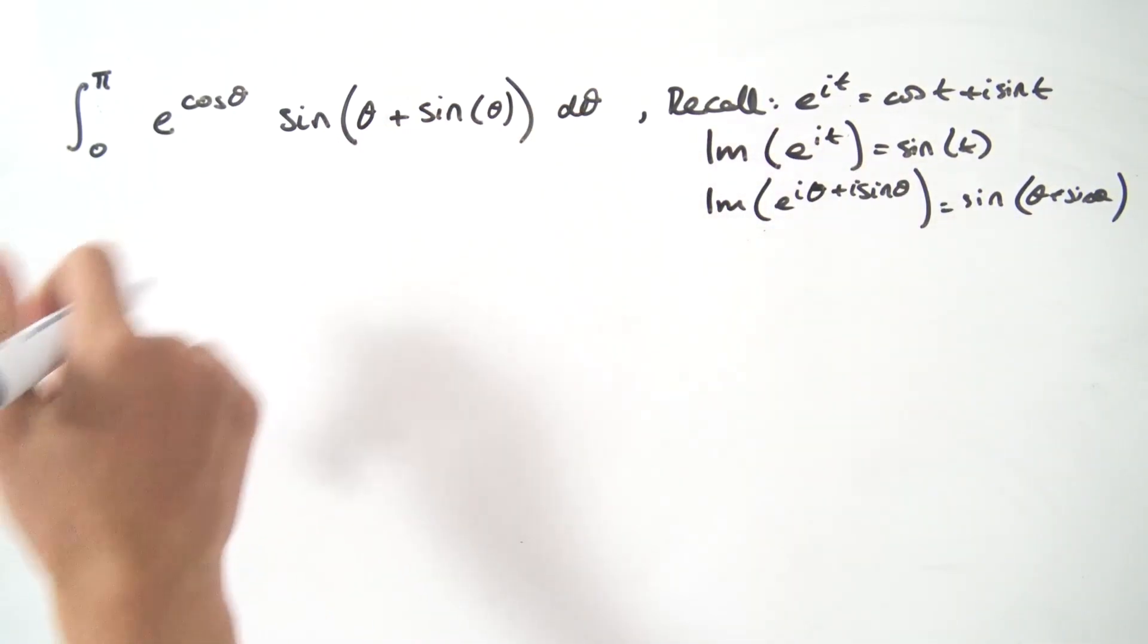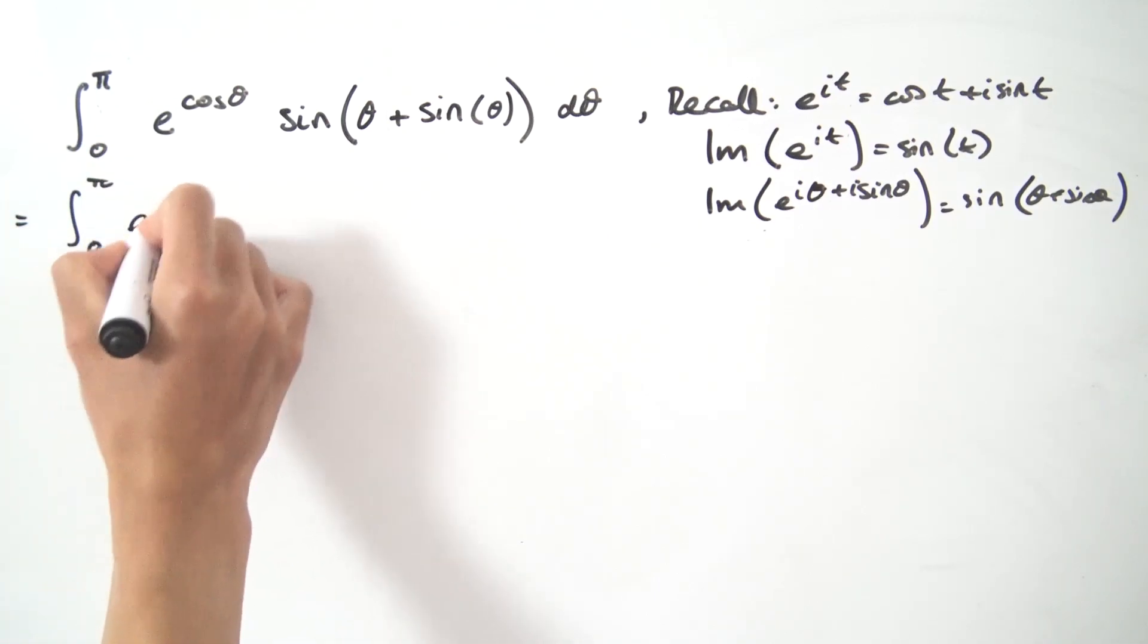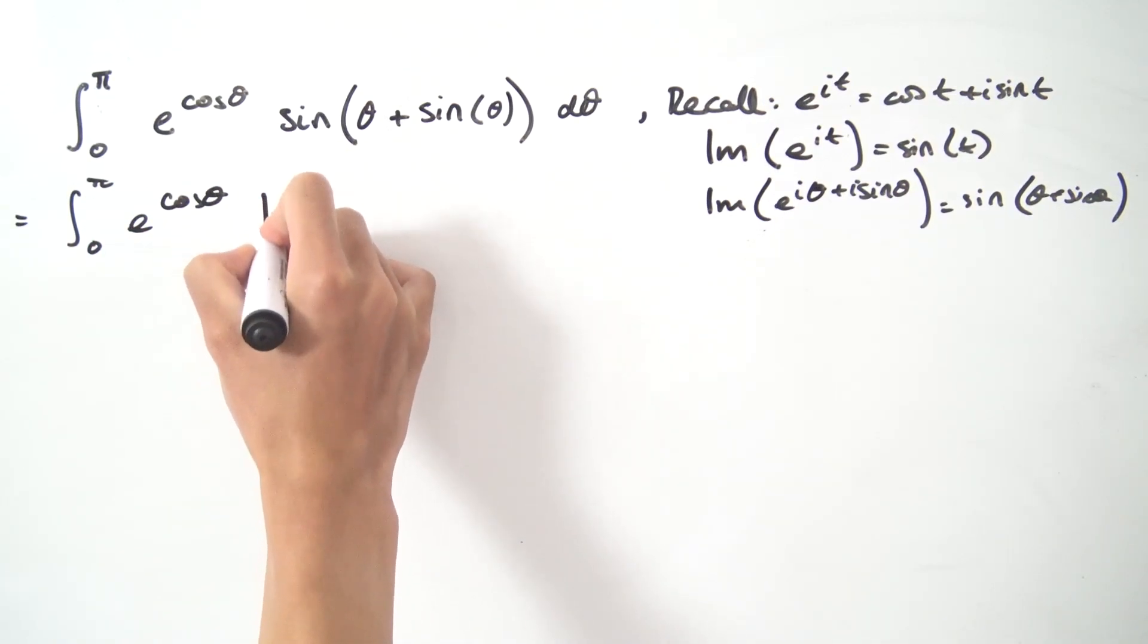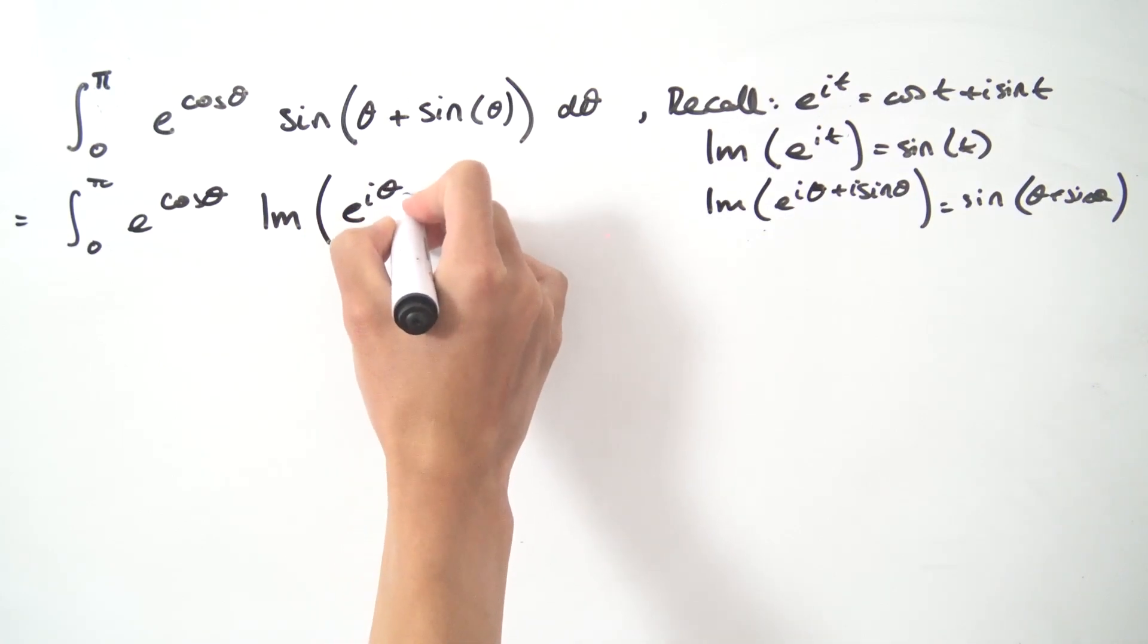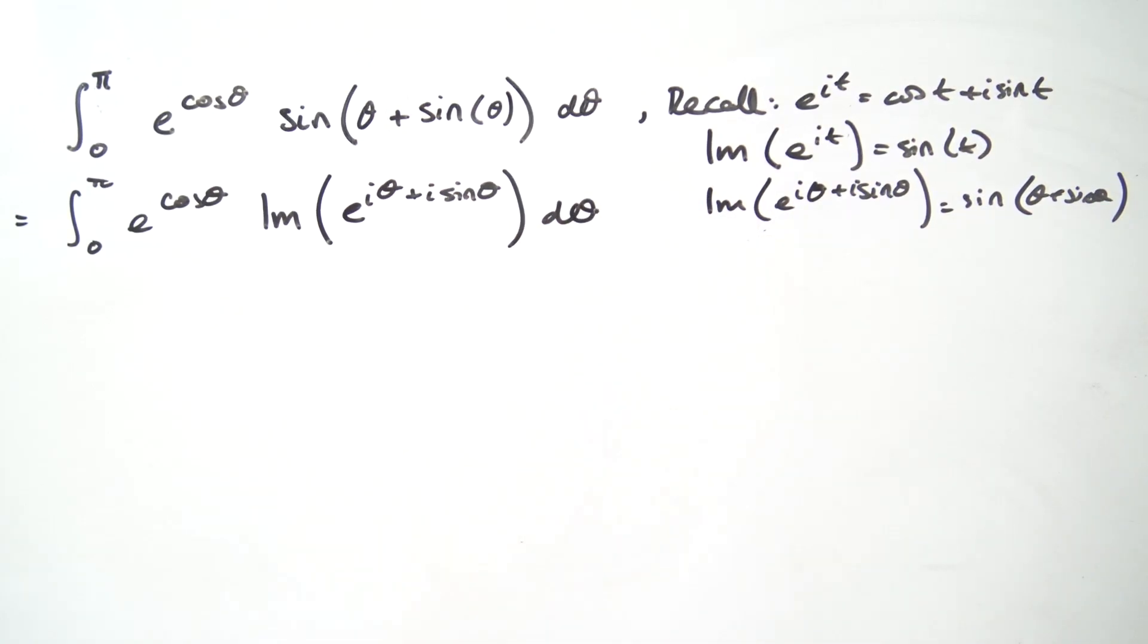Let's plug all this back into our integral. This is going to give us the integral from zero to pi of e to the cosine of theta, and then this sine is going to become the imaginary part of e to the i times theta plus i times the sine of theta, and then integrate with respect to theta.